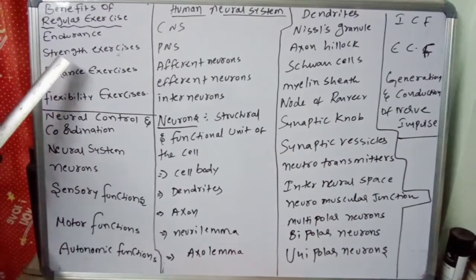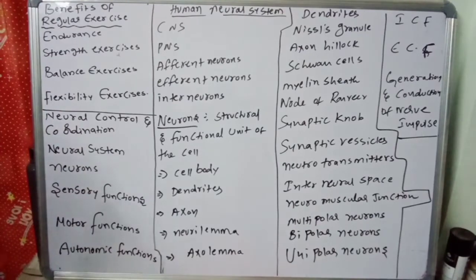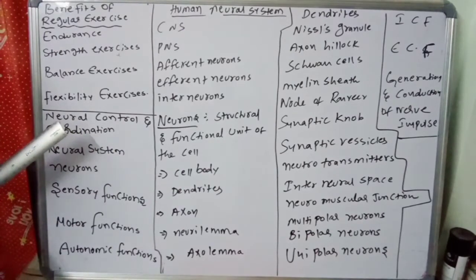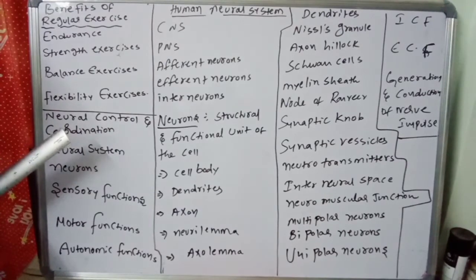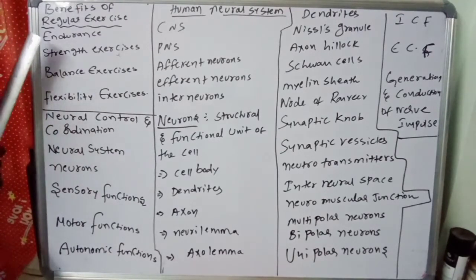So to summarize, exercises — endurance, strength, balance, and flexibility — give us a good quality of life. Next, we are going to discuss the next chapter: neural control and coordination. Locomotion and movement is one of the significant features of living organisms.